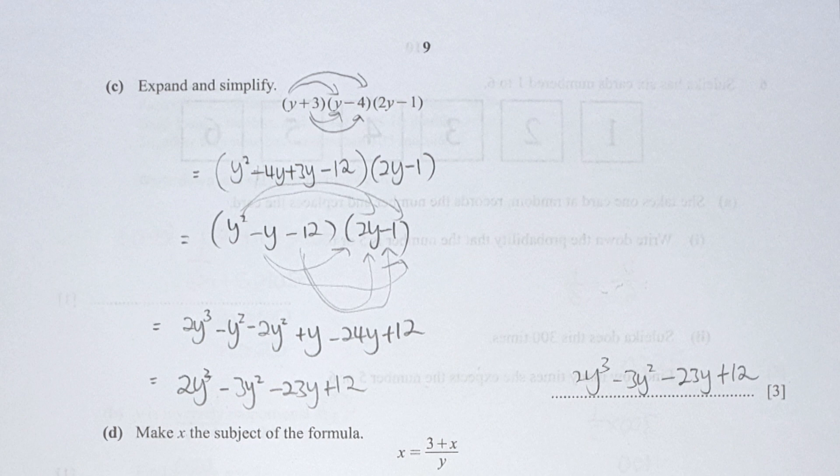For part c, expand and simplify. I first multiply (y + 3) and (y − 4) together. Alternatively, you can solve (y − 4) multiplied by (2y − 1) first. Multiplying them accordingly gives the final result of 2y³ − 3y² − 23y + 12.